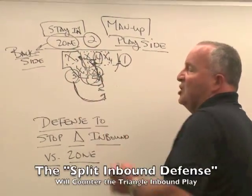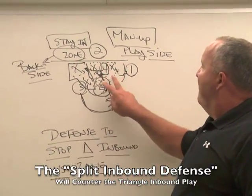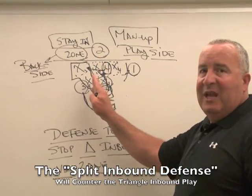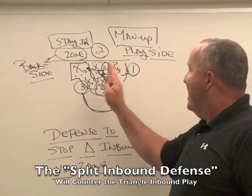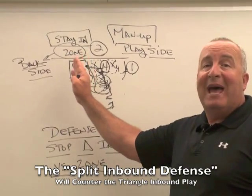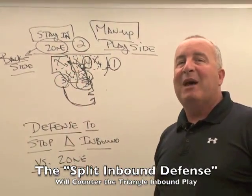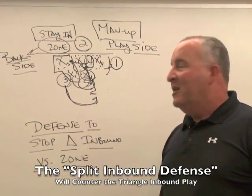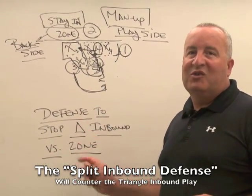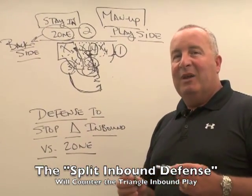To review: 3 defenders are in man defense on the ball side, and 2 defenders are in zone defense on the back side. This split inbound defense will give the triangle inbound play versus zone a tough time being run.